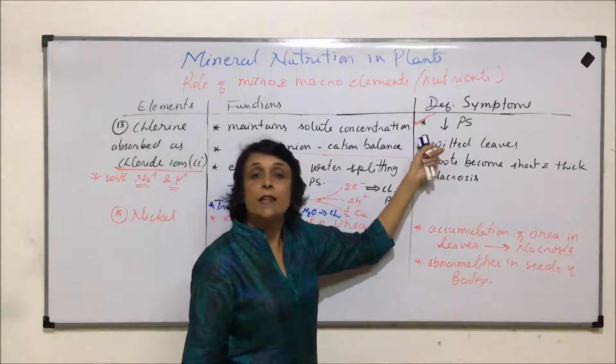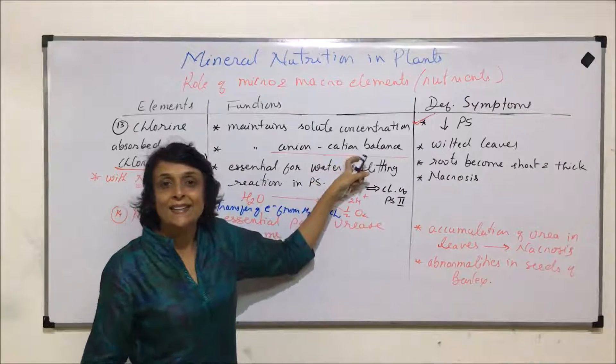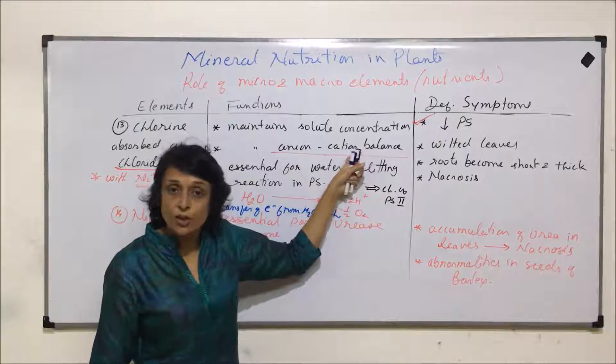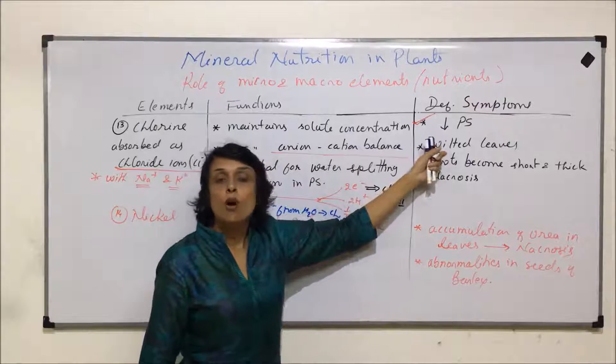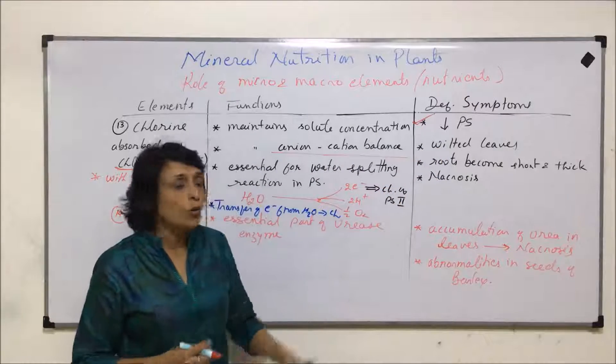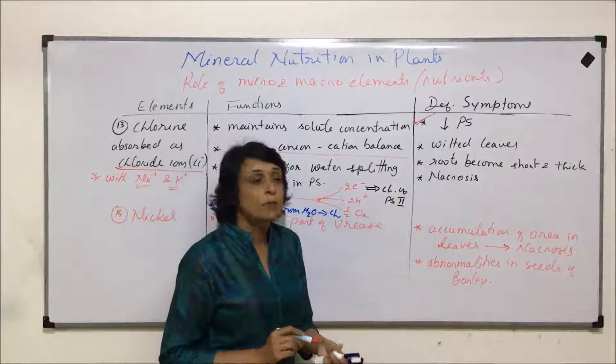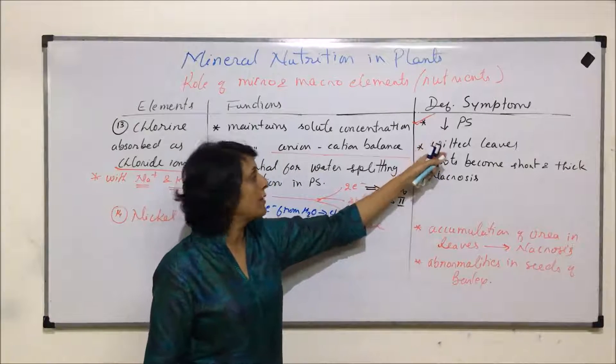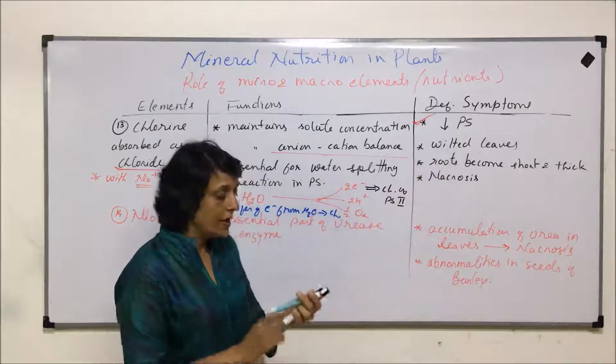The leaves will become wilted because to maintain the turgidity, these cation and ion balance is essential. If these ions are not there, then water from the cells would come out and the leaves would become wilted. The roots become short and thick, and if photosynthesis is not there, sufficient water is also not there, then that would lead to necrosis.